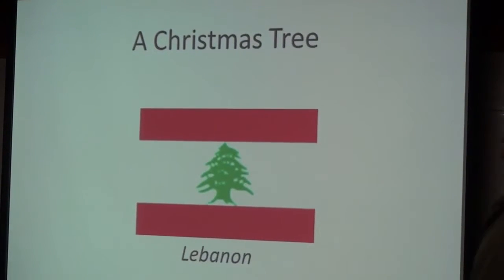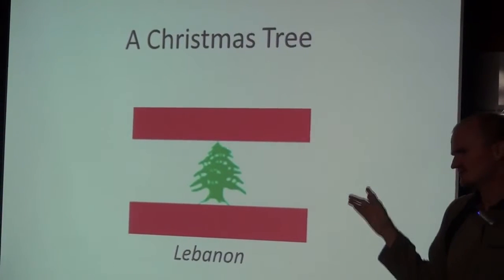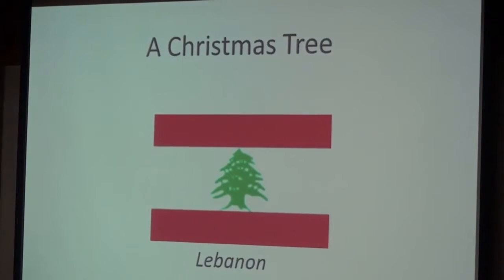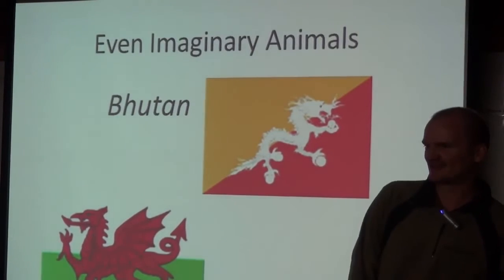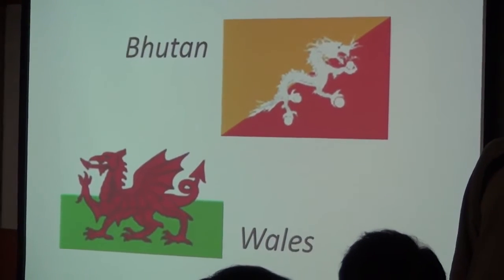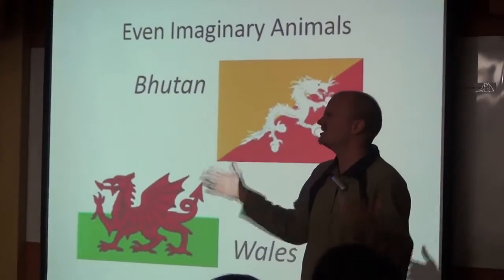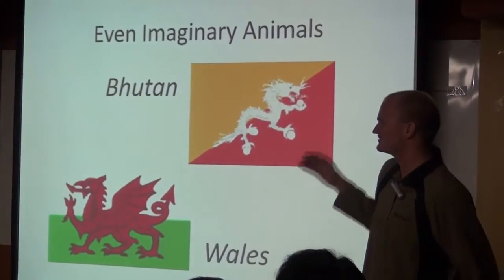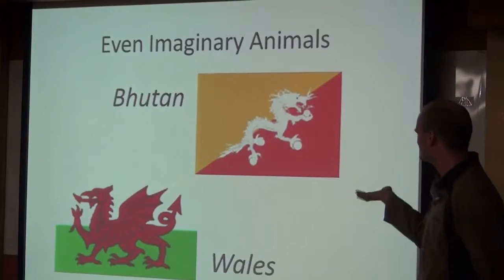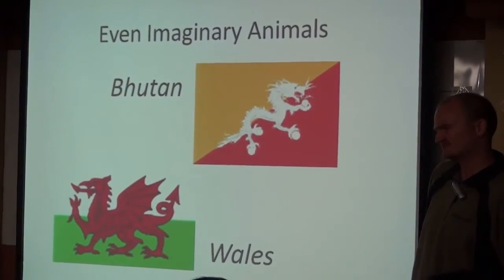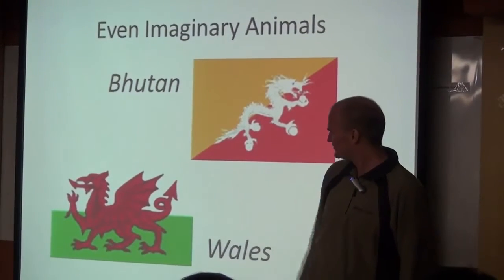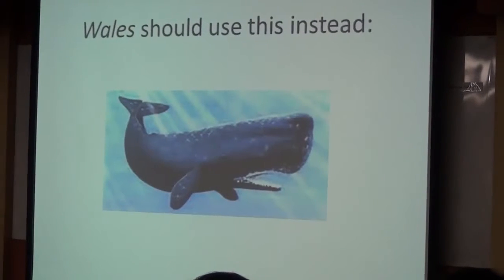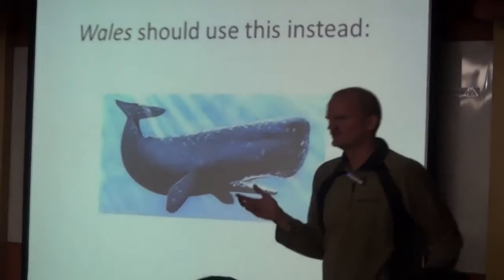Lebanon has a Christmas tree. Well, that's a little better. If you're a Christian, that's okay. If you're Jewish or a Muslim, maybe it's not okay. Some countries have imaginary animals. Bhutan has a dragon. Try to envision this conversation: 'We need an image on our flag — what should it be?' 'A big scary dragon.' It's as though they asked their five-year-old son. And the two dragons look completely different. But look at the flag at the bottom — the dragon is giving someone a high five. I think Wales should use this instead on their flag.